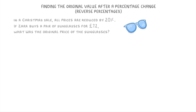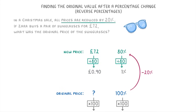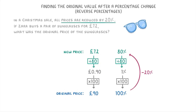Let's try doing this for another one. In a Christmas sale, all the prices have been reduced by 20%. If Zara buys a pair of sunglasses for £72, what was the original price of the sunglasses? We know that once it's been reduced by 20%, the new price is £72. Just like before, we can think of the original price as 100%, so if it's been reduced by 20%, the new sale price must be 80%, because 100 minus 20 is 80. So £72 is equivalent to 80%, meaning 1% is £0.90, and multiplying by 100 gives us £90. So the sunglasses must have cost £90 before the sale.